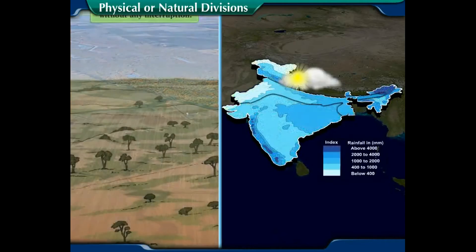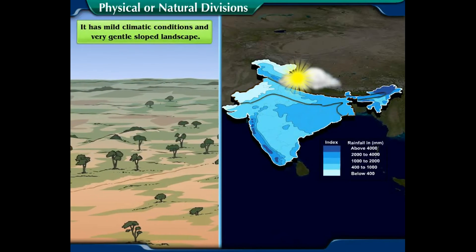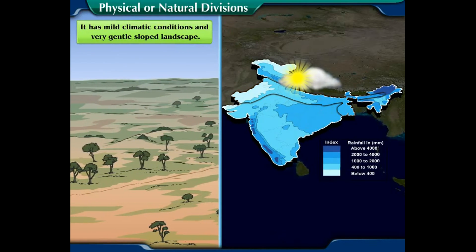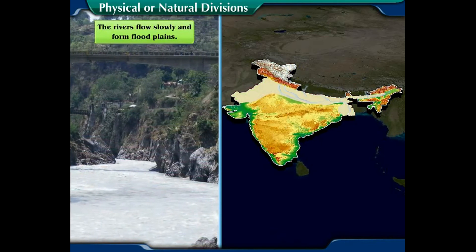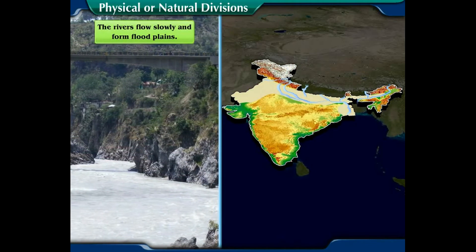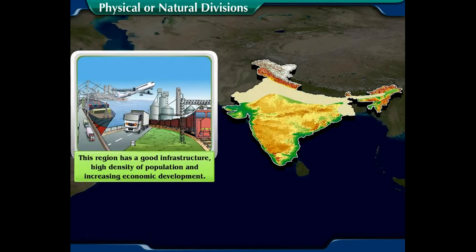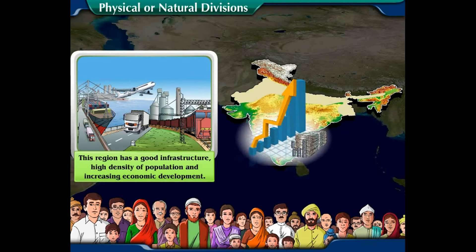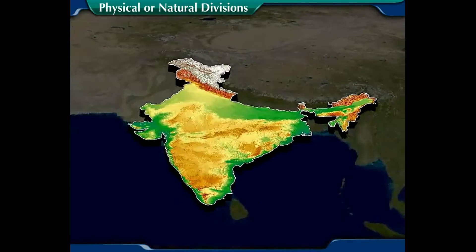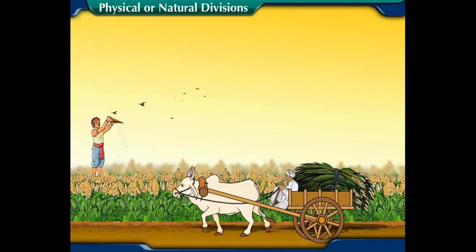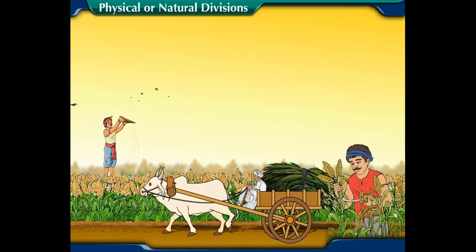Number three, the north Indian plains have mild climatic conditions and a very gentle sloped landscape. Number four, the rivers flow slowly and form flood plains. Number five, this region has a good infrastructure, high density of population, and increasing economic development. The north Indian plains are also the most intensely farmed areas of the world.